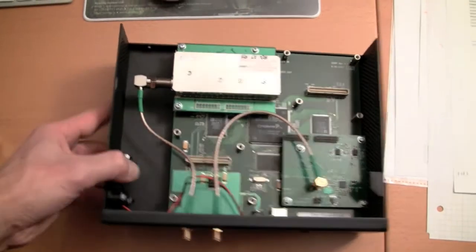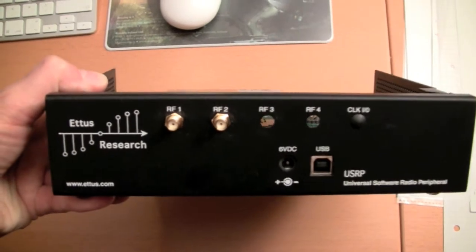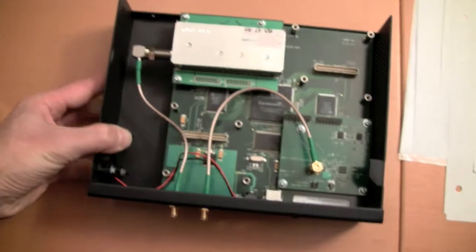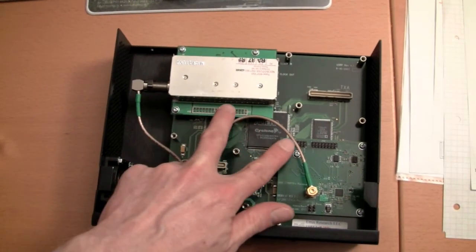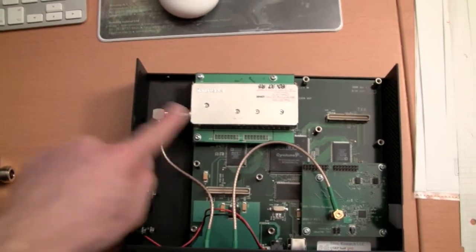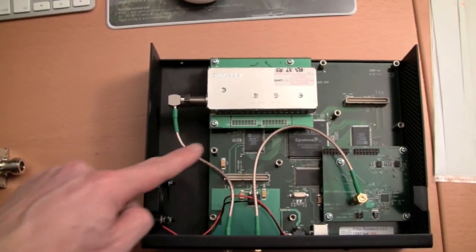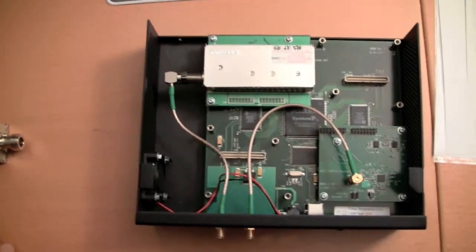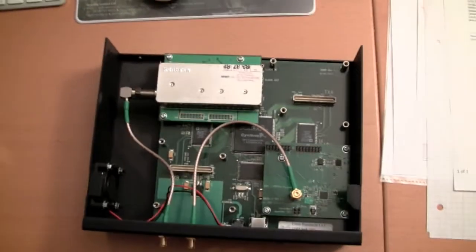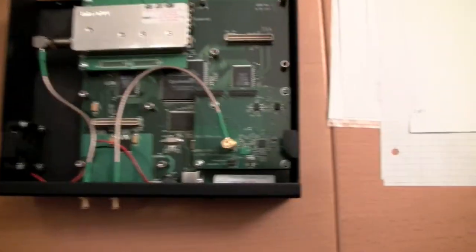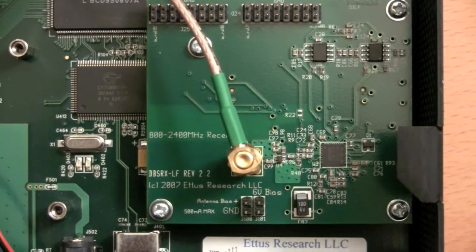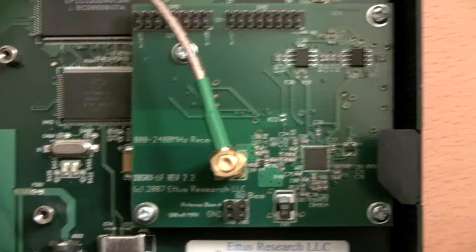This is the USRP, the hardware part of the receiver. You can see there it has the antenna inputs, and the antenna signal goes to the tuner boards, the receivers. This is a standard television tuner which has been adapted to the USRP. It covers, I think, 50 to 800 MHz, which is standard for televisions. The other board is the DBS-RX, which covers 800 MHz to 2.4 GHz.